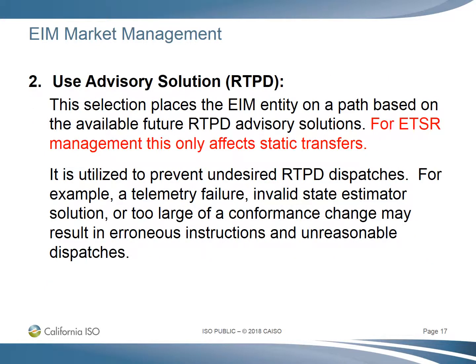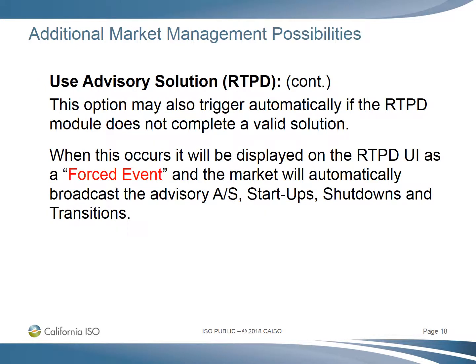The second is Use Advisory Solution, which is available in the RTPD timeframe. This selection places the EIM entity on a path based on available future RTPD advisory solutions. For ETSR management, this only affects static transfers and not dynamic. It is utilized to prevent undesired RTPD dispatches — for example, when telemetry failures, invalid state estimator solutions, or too large a conformance change may result in erroneous instructions and unreasonable dispatches. This option may also trigger automatically if the RTPD module does not complete a valid solution.